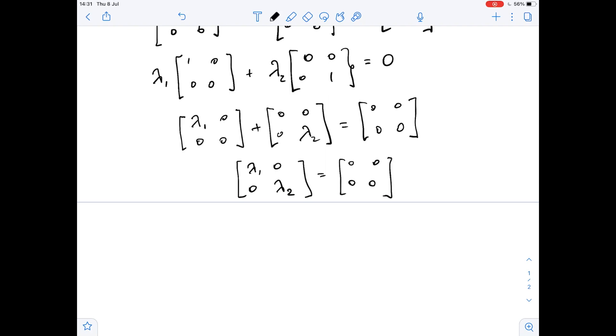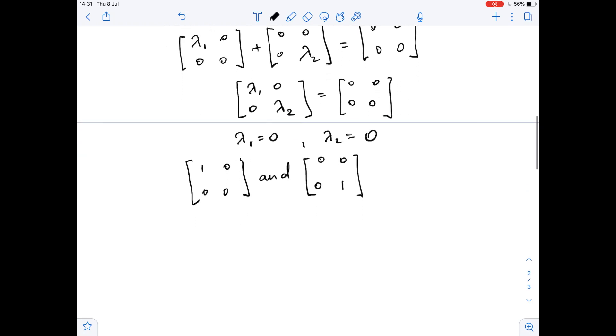Since these matrices are equal, their corresponding entries are equal. So lambda_1 equals zero and lambda_2 equals zero. That means the matrices [1 0; 0 0] and [0 0; 0 1] are linearly independent.